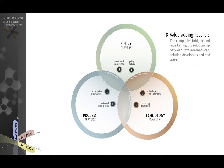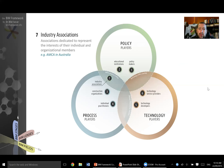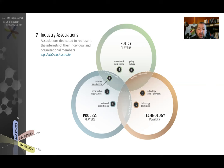In the overlap between these different fields, we have other players. If you remember from the BIM fields video, this overlap indicates that you have players which belong to one field but are producing deliverables typically in another field. For example, associations like AMCA or the Australian Institute of Architects are populated by players from the process field, but they generate policy deliverables — for instance, lobbying on behalf of their members to the government.